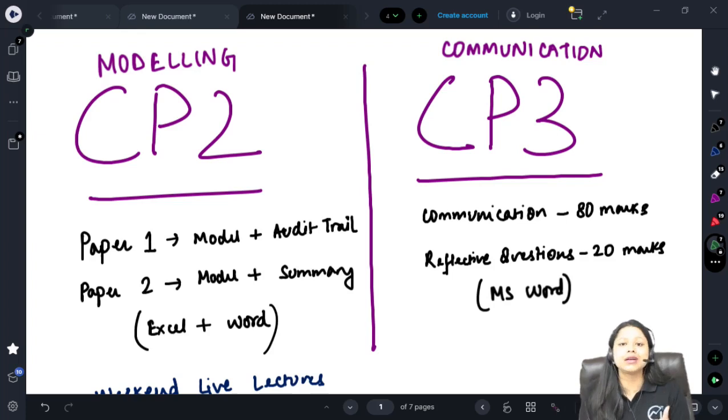So 80 marks is the communication. Entirely you have to draft either a letter or a meeting paper or an article or an email, whatever it is. That will be of 80 marks and 20 marks is the reflective questions. Generally 3 to 6 questions which is basically a reflection on the 80 marks communication which you have done. So this is all about CP2 and CP3 how the paper pattern is.